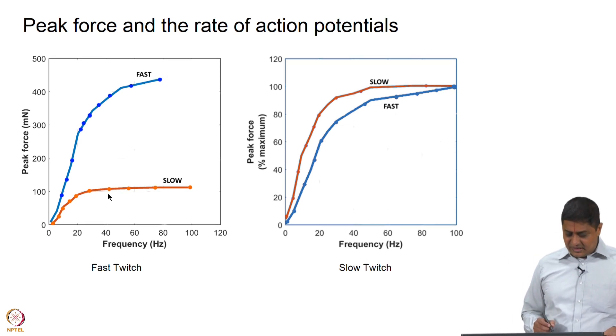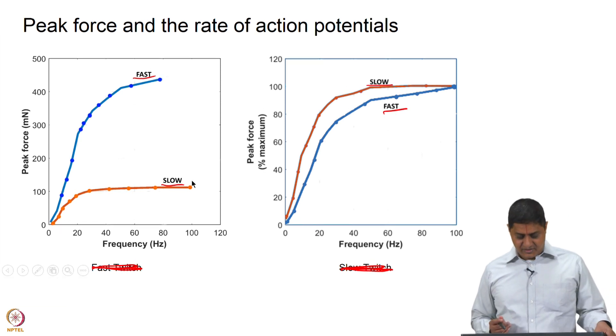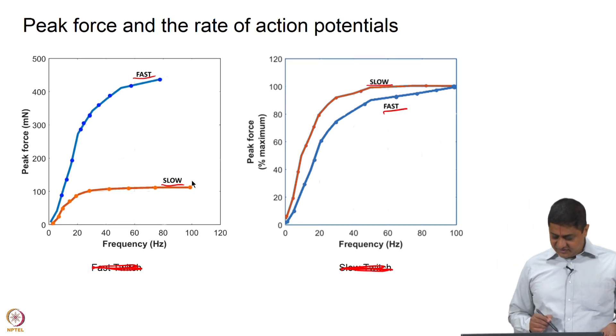The plots have titles fast twitch and slow twitch. This must be removed actually. Slow twitch and fast twitch are present in the plot itself - that is what must be referred for a clearer understanding. This presence of fast twitch and slow twitch titles could lead to misunderstanding, that is why I am just cutting this.